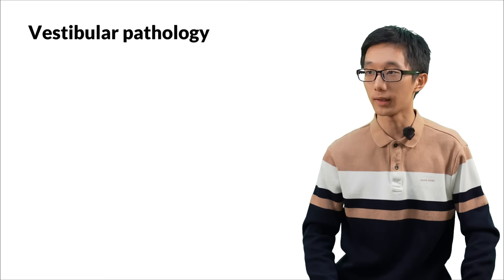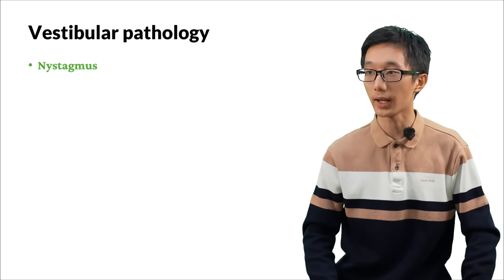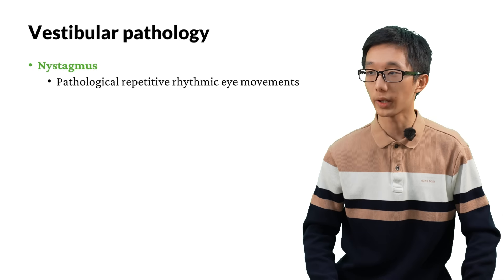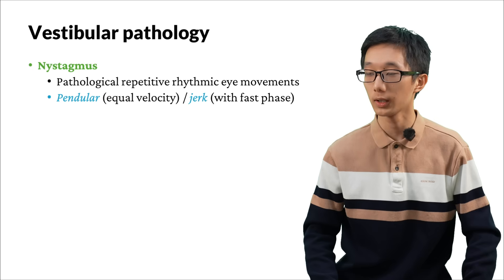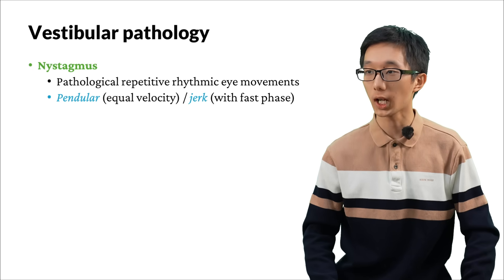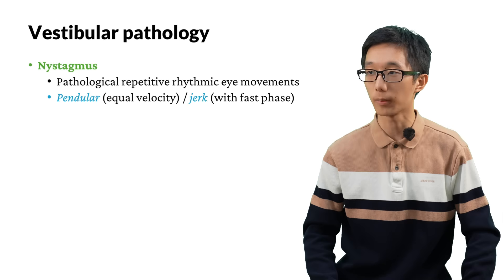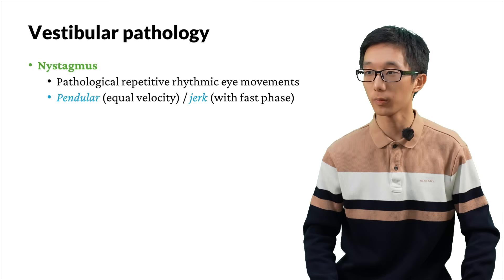The last part is vestibular pathology. Nystagmus, as we've mentioned before, is a pathological, repetitive, rhythmic eye movement — it is involuntary. There are multiple types of nystagmus. We've talked about the jerk type of nystagmus, with a fast phase and a slow phase. There is also pendular nystagmus, which is an equal velocity type.